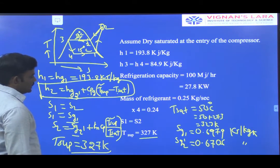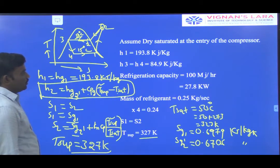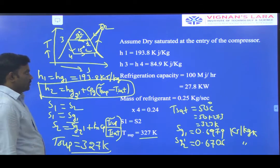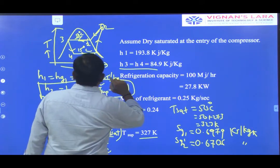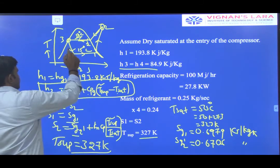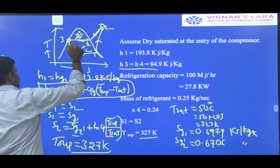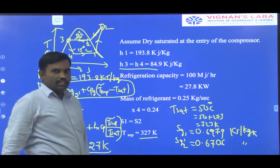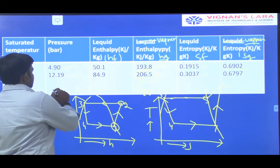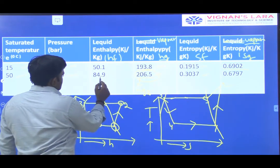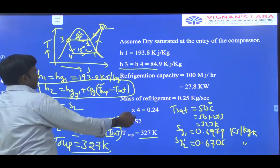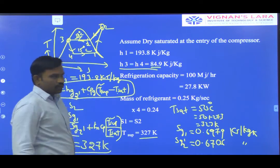After calculating H2, we use that value to evaluate the performance of the VCR system. H3 = H4 (isenthalpic process). H3 is the liquid enthalpy taken from the property table at 50 degree centigrade temperature line, which is Hf = 84.9 kJ/kg. So H3 = H4 = 84.9 kJ/kg.